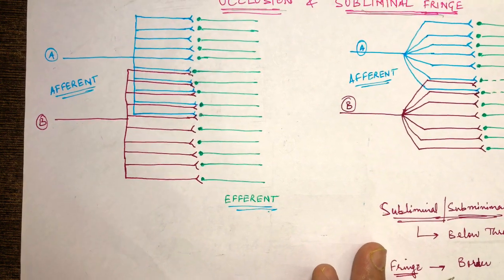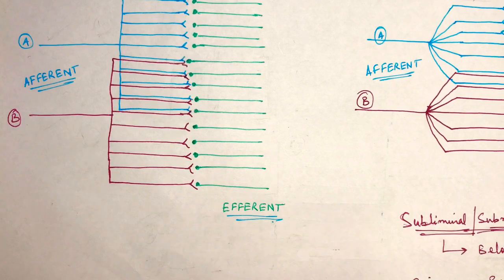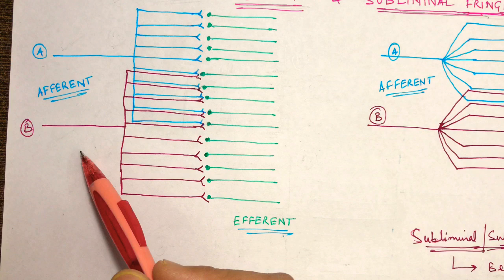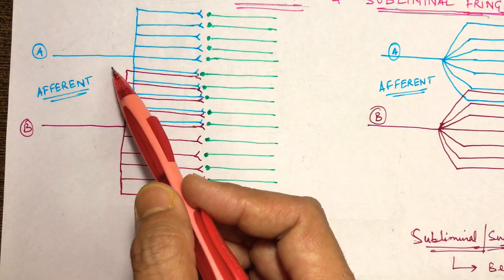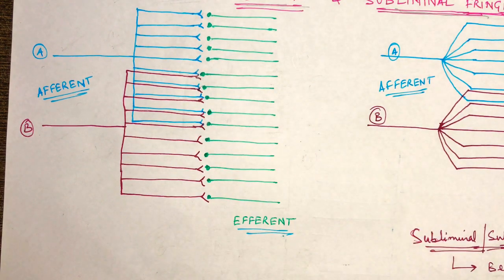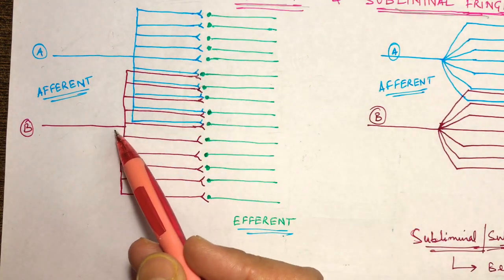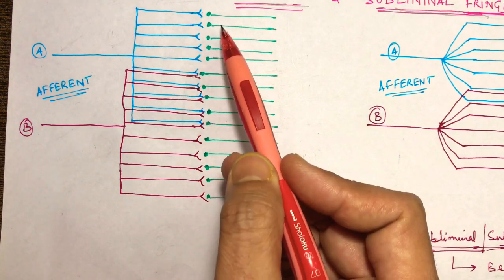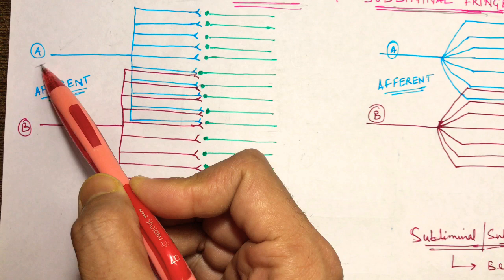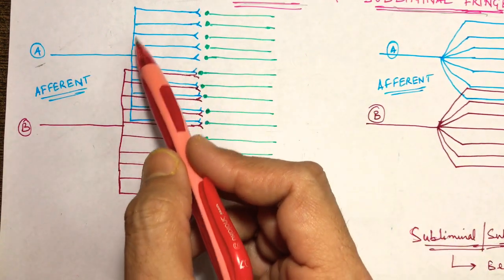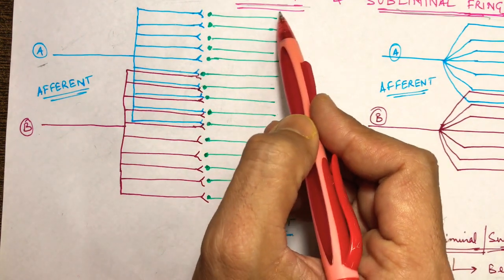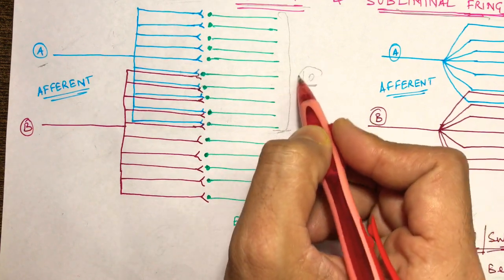First of all, synapse is between afferent and efferent neurons. In this diagram I'm drawing afferent and efferent with different colors. Diagram one: afferent A is blue, afferent B is red. The blue one has 10 branches, and similarly afferent B also has 10 branches. The green ones are the efferent neurons. If we stimulate only A, all 10 efferent neurons will get stimulated — action potential will be generated in these 10 efferent neurons.